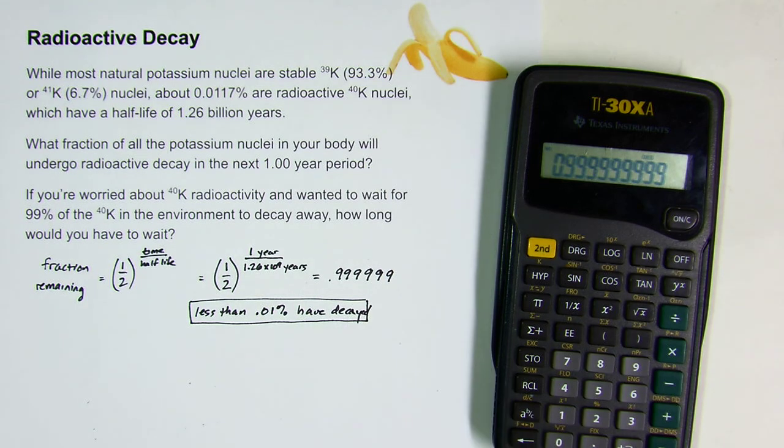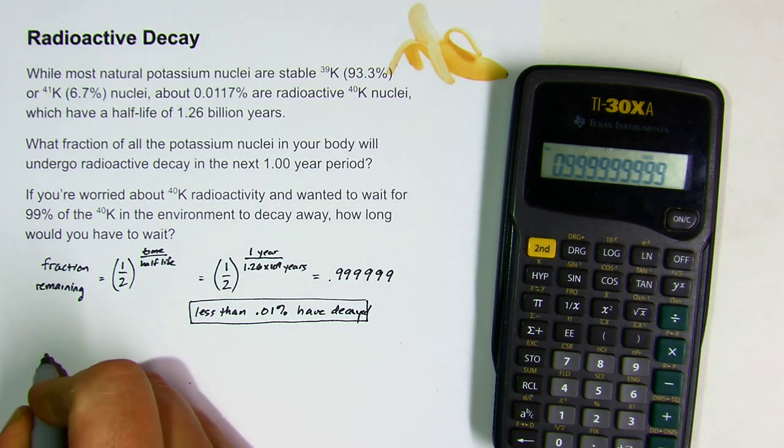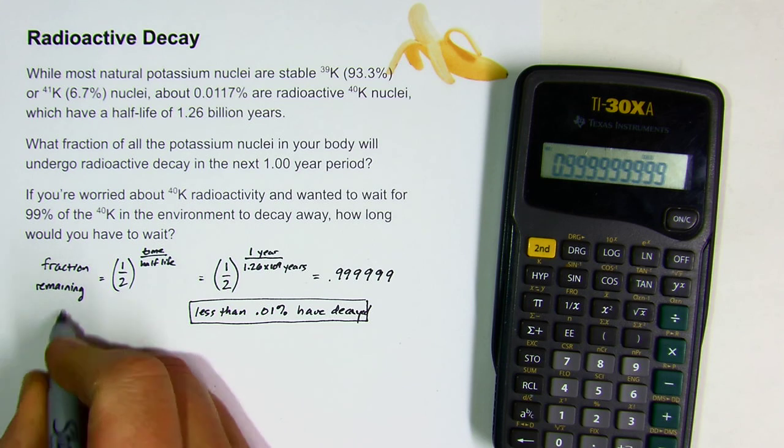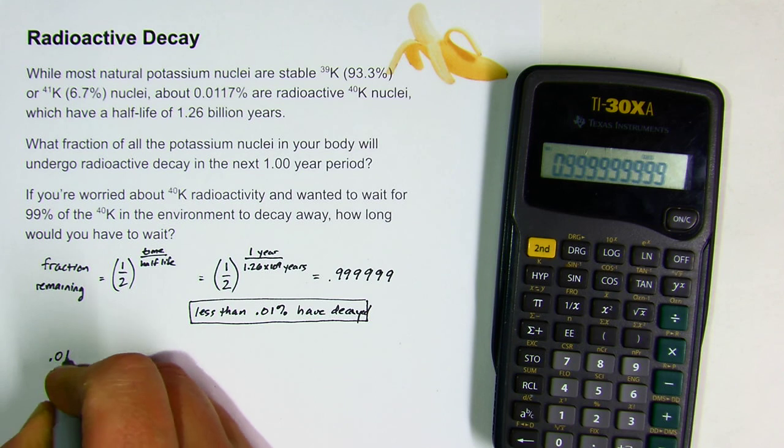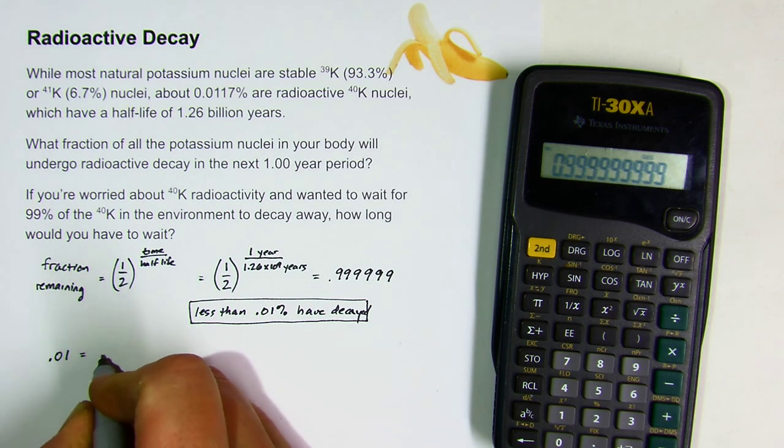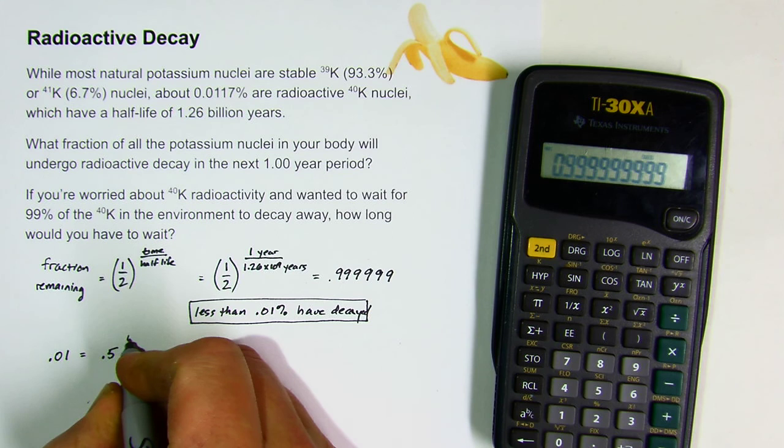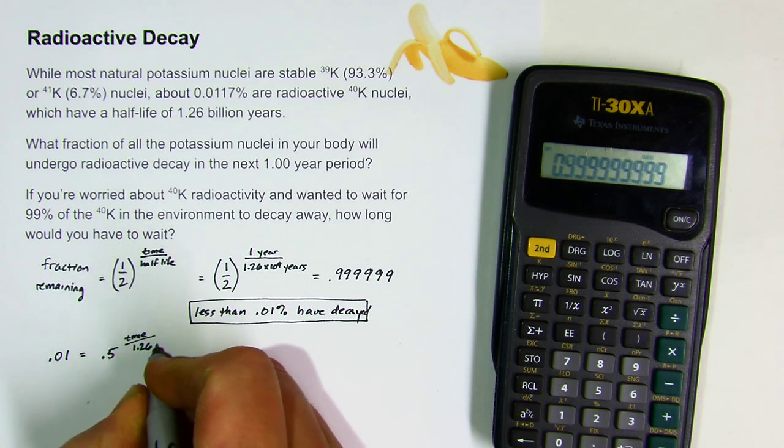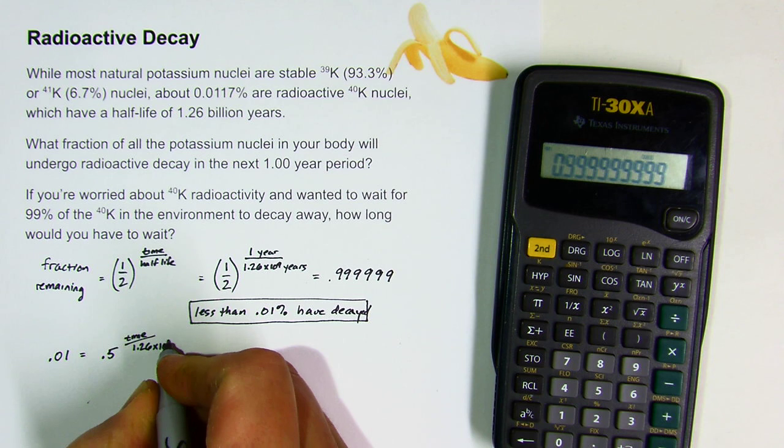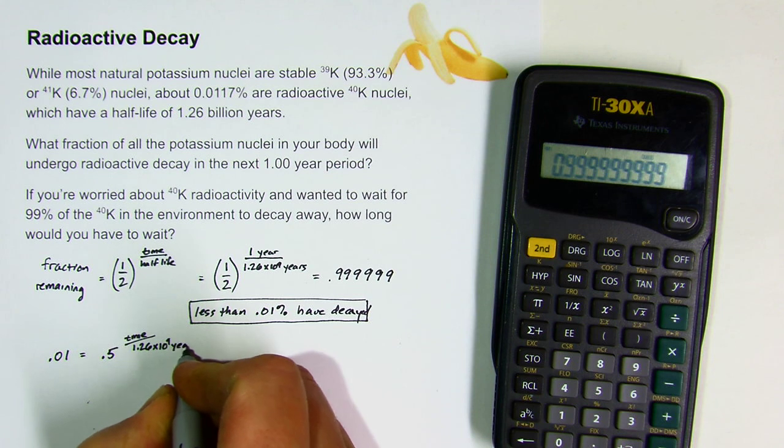So if you wanted to wait for 99% of that potassium to decay away, how long would you have to wait? You can use the same expression, but now the fraction remaining we want to have is just one percent or 0.01 expressed as a decimal. One-half is 0.5, and this is to the however much time over 1.26 times 10 to the ninth years.